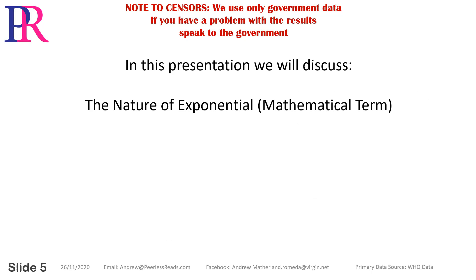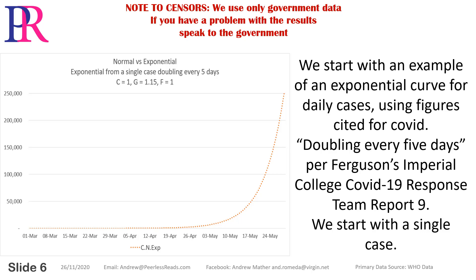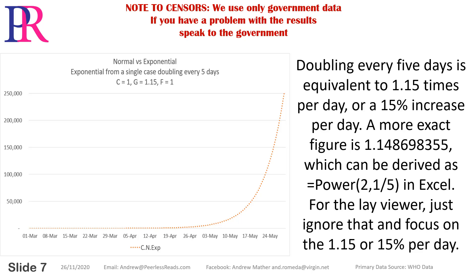In this presentation, we will discuss the nature of exponential in the mathematical sense. We start with an example of an exponential curve for daily cases using figures cited for COVID — doubling every 5 days, per Ferguson's Imperial College COVID-19 Response Team Report 9. We start with a single case. Doubling every 5 days is equivalent to 1.15 times per day, or a 15% increase per day.